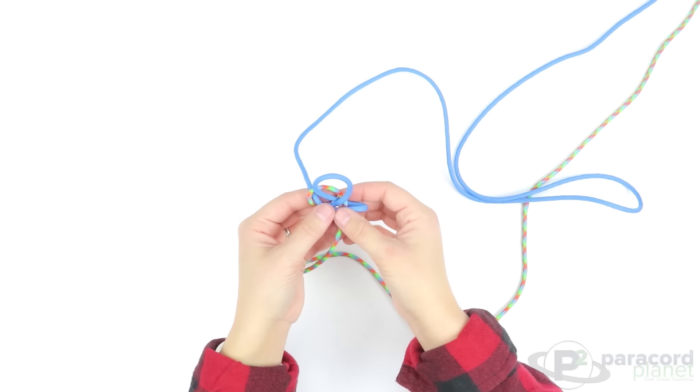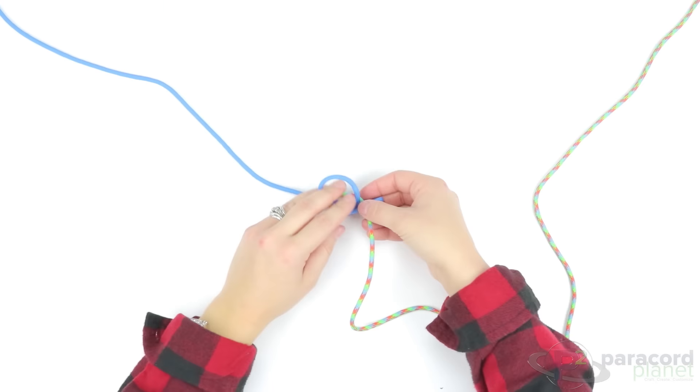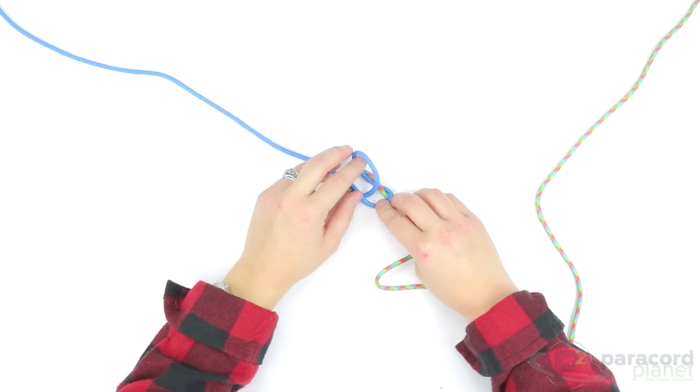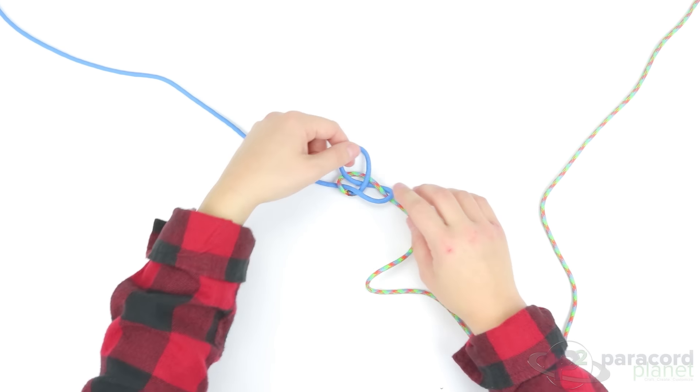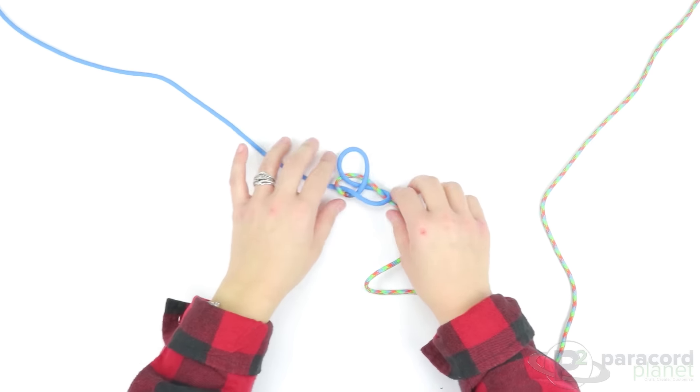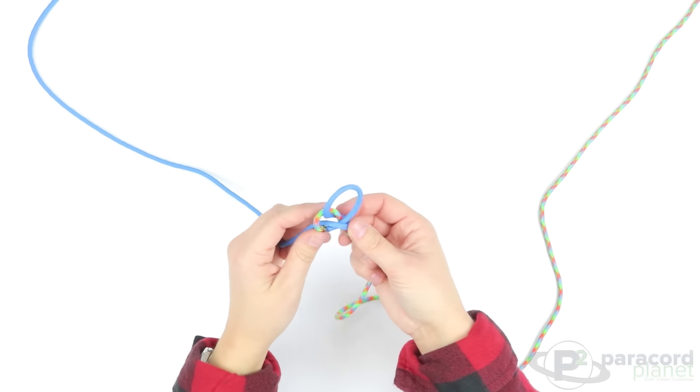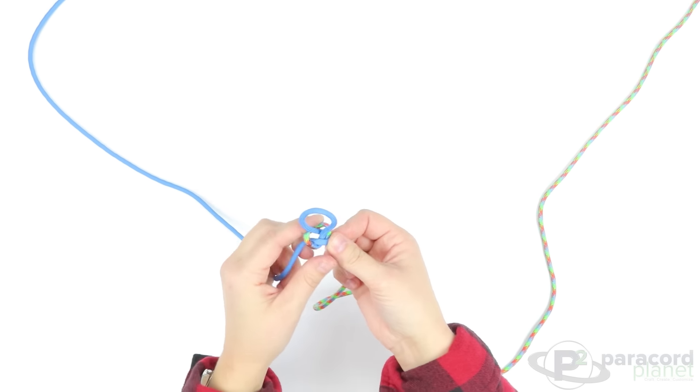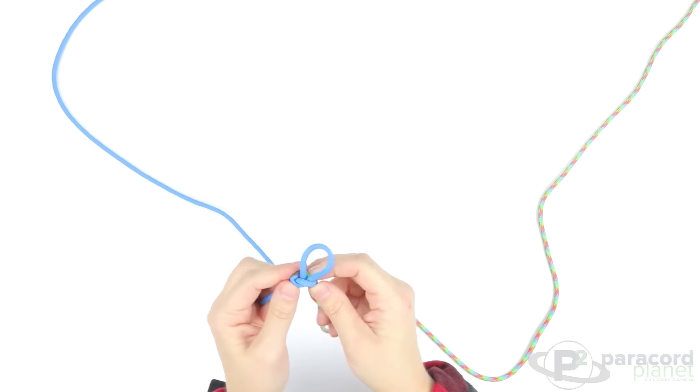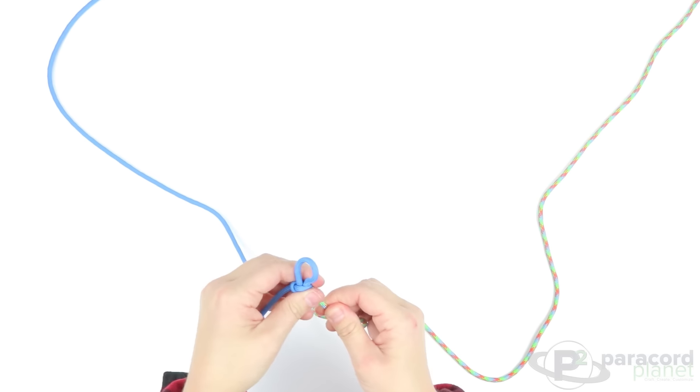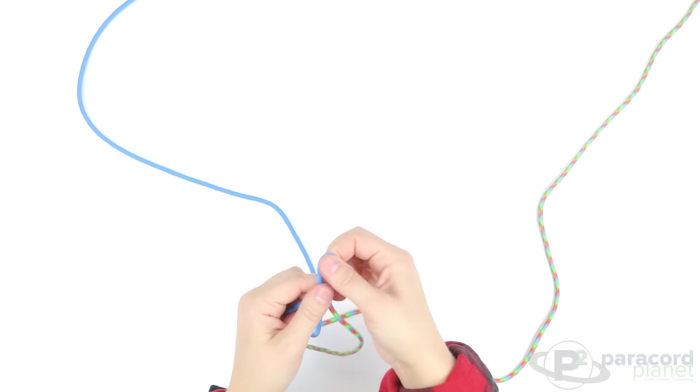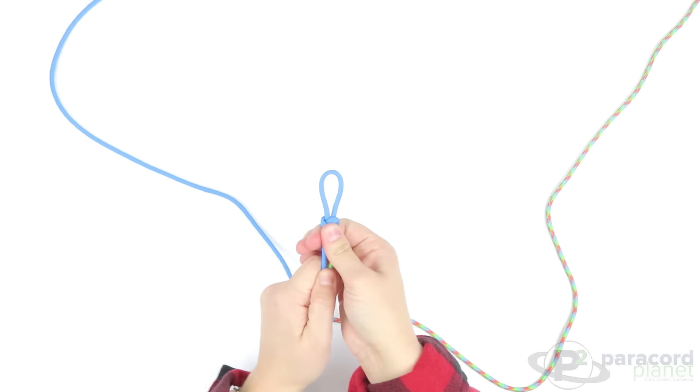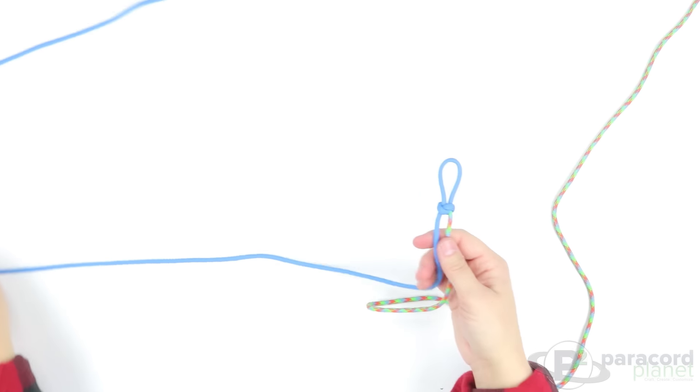So this is a loose version of what you should have at this point. And then you'll just pull those tight. Okay, so there is the first knot.